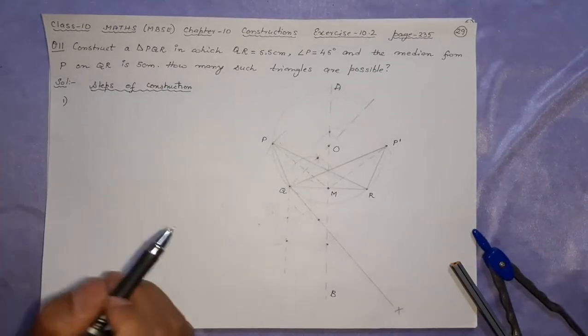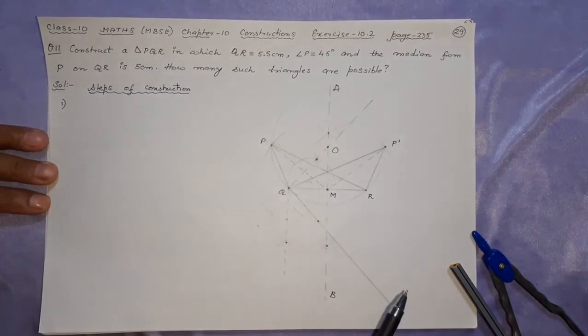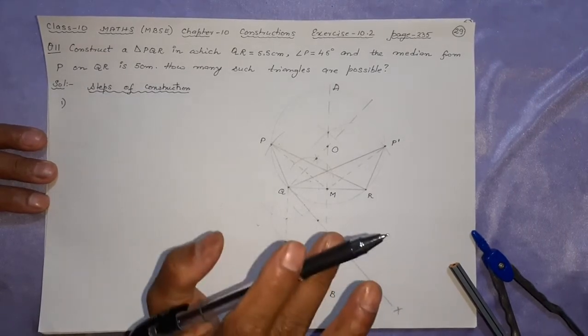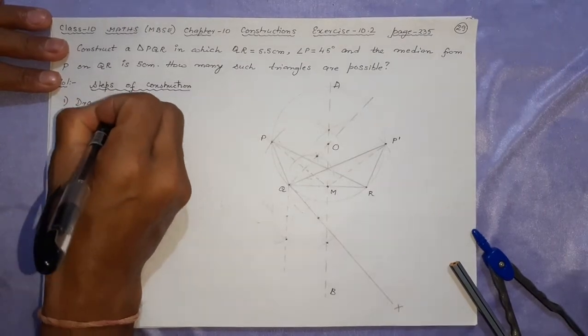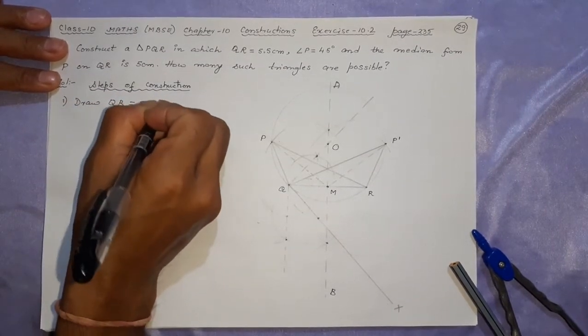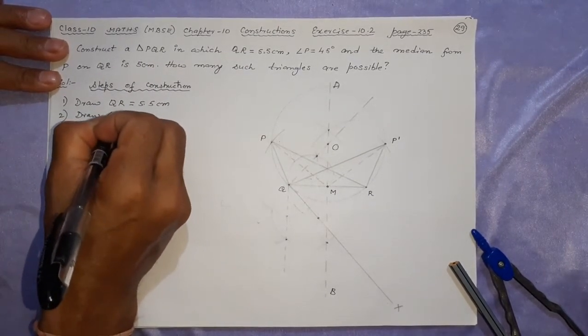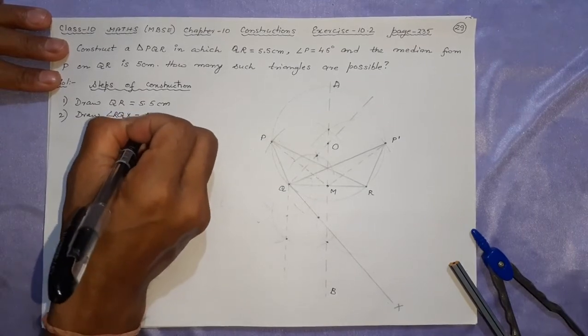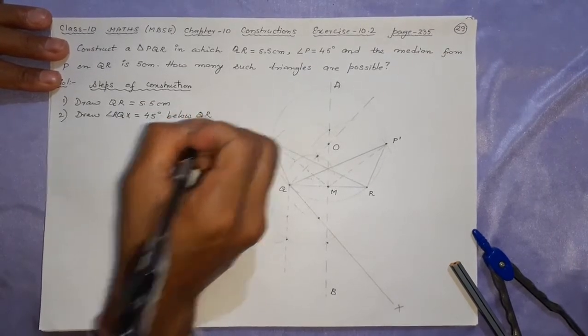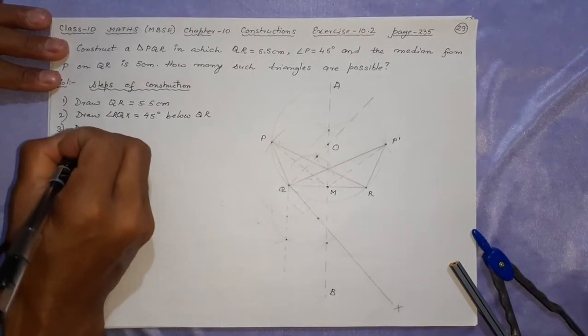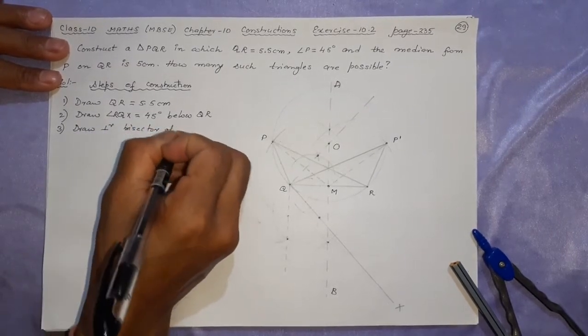Let's quickly move to steps of construction. In this type of question number 10 and 11, you can join PM and P dash M also. That will ensure that you are showing the median also there. Draw QR equal to 5.5 centimeters. Draw angle RQX equal to 45 degrees below QR. Done. Next step: draw perpendicular bisector of QR.